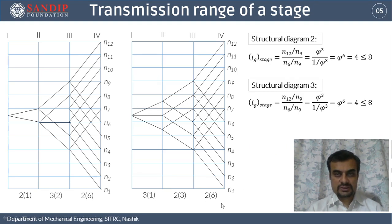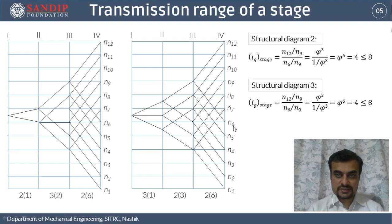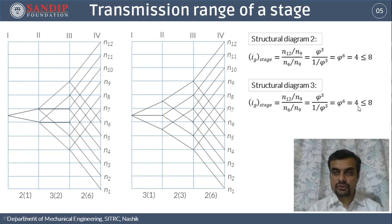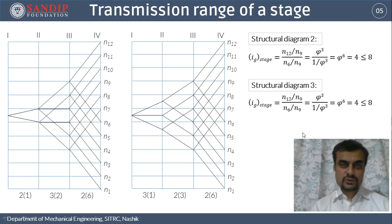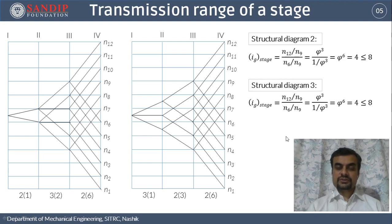For the third structural diagram, close observation again reveals that we only need to calculate I-stage for the third stage. The input speed is N9 and the output speeds are N12 and N6, making the calculation identical to structural diagram 2, yielding an I-stage value of 4, which is less than 8. Thus the third structural diagram is also acceptable. In practice, some of the 18 structural diagrams will be eliminated in this process.